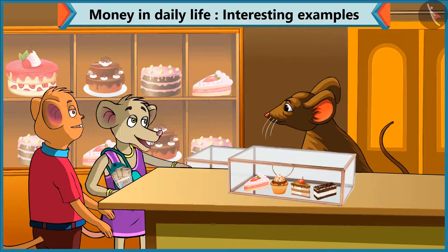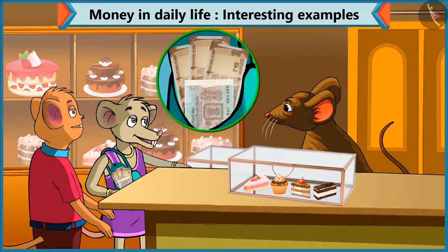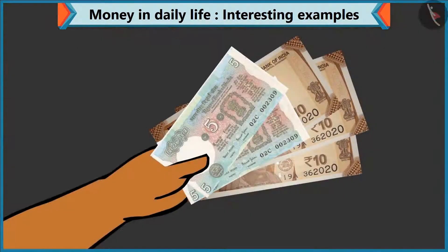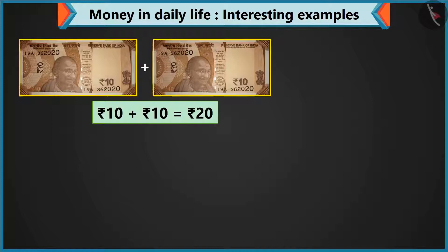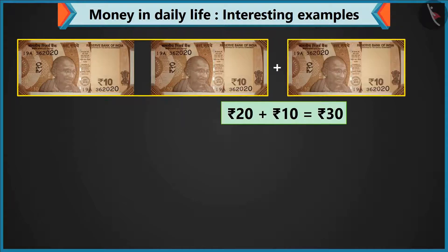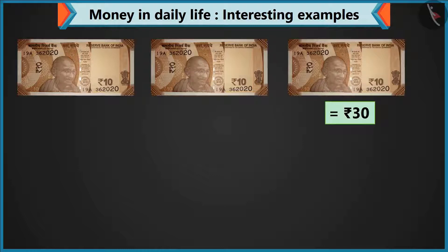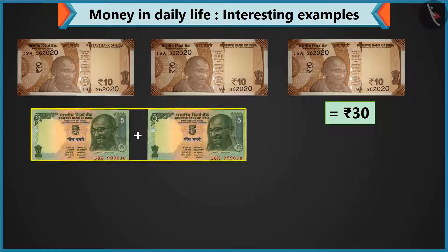I will give. Hey, I only have 3 notes of 10. Okay, so give 3 notes of 10 and 2 notes of 5. Here you go. Look, Chi Chi, adding 2 notes of 10 makes 20. Adding 10 to 20 makes 30. And 10 rupees by adding 2 notes of 5.